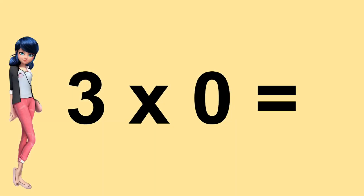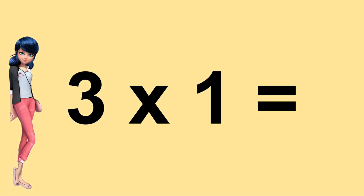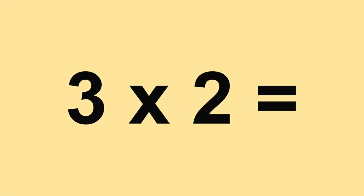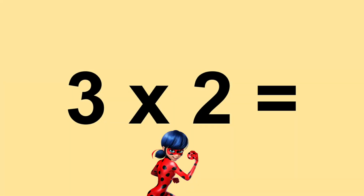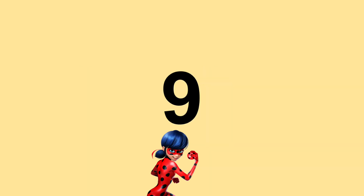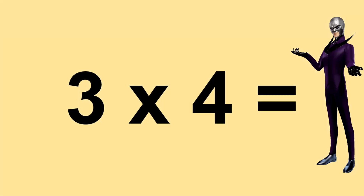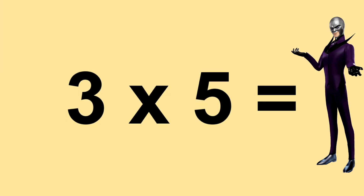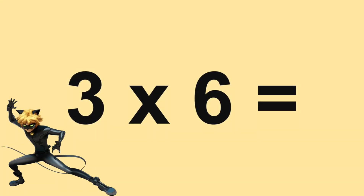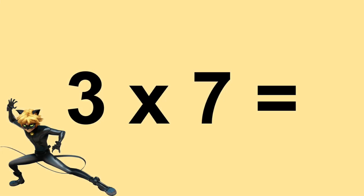Three times zero equals zero. Three times one equals three. Three times two equals six. Three times three equals nine. Three times four equals twelve. Three times five equals fifteen. Three times six equals eighteen. Three times seven equals twenty-four.